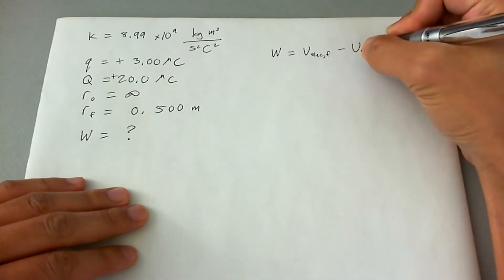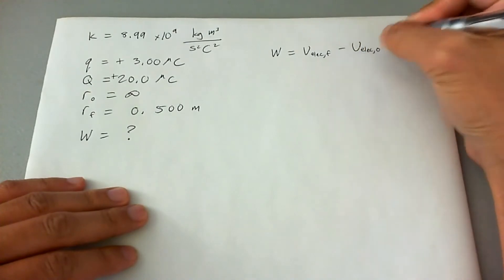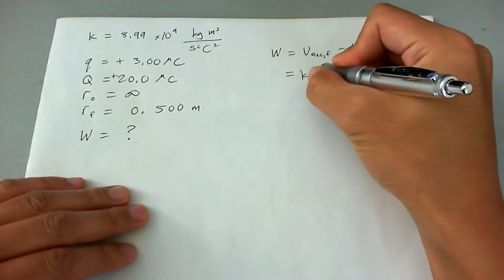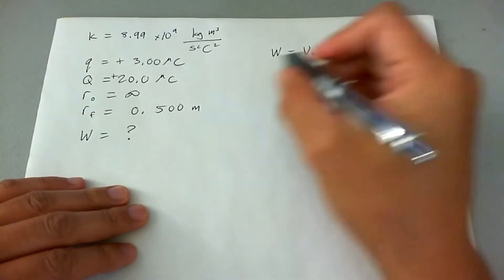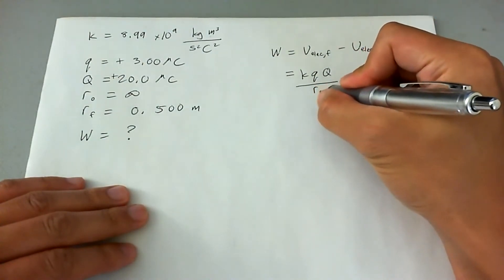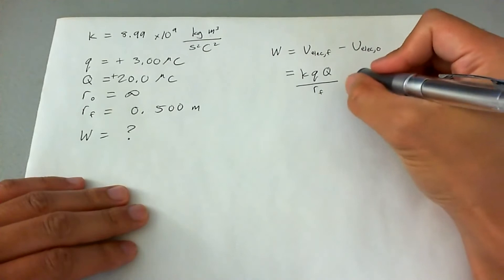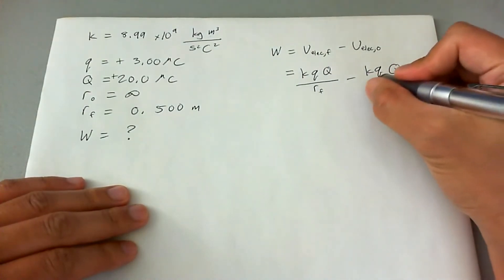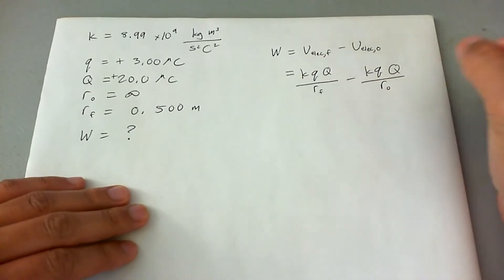So that's the electric potential energy final minus the electric potential energy initial. And that ends up being kq big Q, so the two different q's that we're comparing, divided by r sub f, minus k little q big Q, divided by r sub naught.